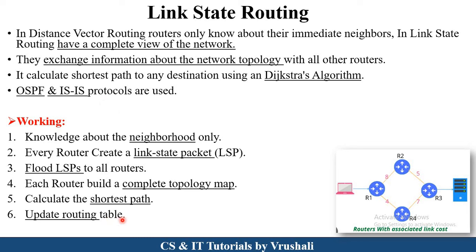These are the working steps of link state routing. First, a router has knowledge of neighboring routers only; it discovers neighbor routers and measures the link and distance. After that, every router creates a link state packet, which stores the neighbor distance and neighbor information. Then, flood LSP: the router sends this link state packet to all other routers in the network — called flooding — ensuring every router gets a complete view of the network, not only a neighbors view. Each router builds a complete topology map, calculates the shortest path using Dijkstra's algorithm, and every router generates a routing table.